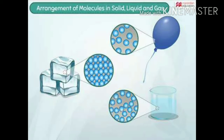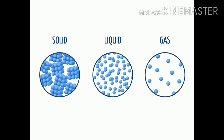Jaise ki humne discuss kiya tha, har matter bahut chote-chote particles se milkar bane hain jinhe molecule kehte hain. Aur molecule ki arrangement ke upar depend karta hai ki solid, liquid aur gas — jo hain hamare three states of matter hain. In teeno mein jo arrangement hoga wo different-different hoga. Each of these states is also known as phase. In three states ko hum phase bhi bolte hain.